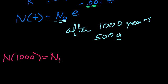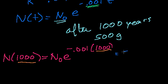Which is equal to n sub 0 times e to the minus 0.001 times 1,000. Right, that's the n of 1,000, that's the 1,000. And I'm saying that that's equal to 500 grams. That equals 500 grams. So I just have to solve for n sub 0.